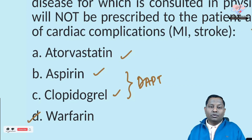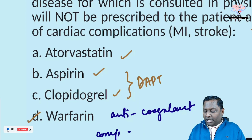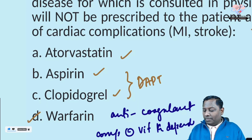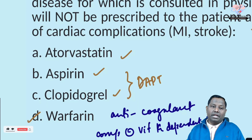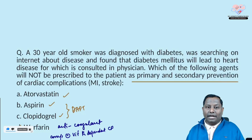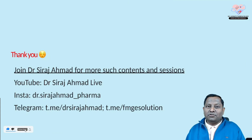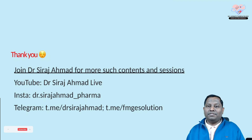Warfarin is an anticoagulant — a competitive inhibitor of vitamin K-dependent clotting factors — and has no role in prevention of cardiac complications related to diabetes. So warfarin would not be prescribed here. I hope you all enjoyed these five topics in five minutes; I'll see you in the next episode. Please like, share, and subscribe. Thank you very much.